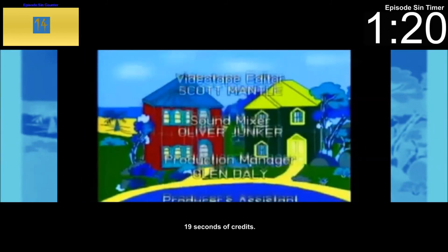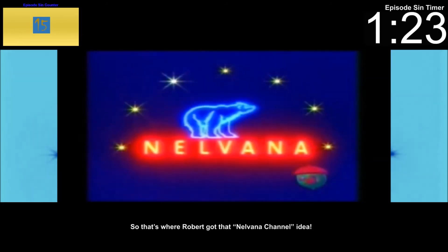Breaking the fourth wall. What? 19 seconds of credits. So that's where Robert got that Nalvana channel idea.